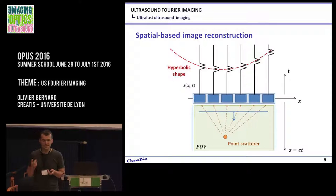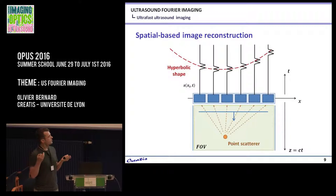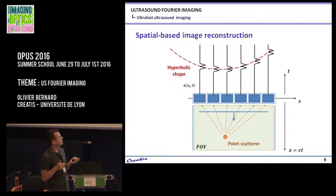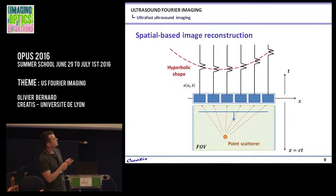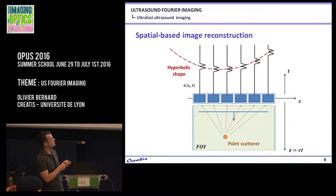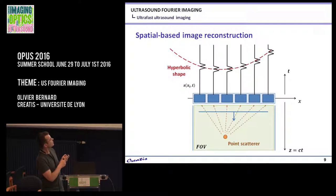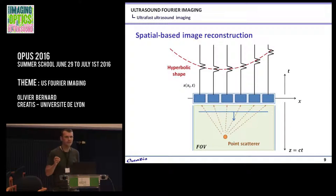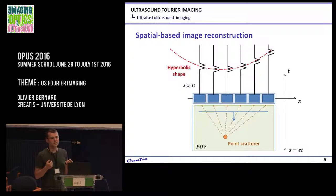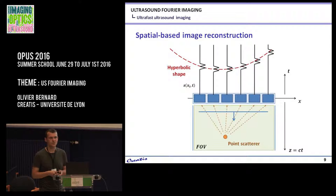Going back to the spatial-based approach: imagine you have only one point target and you emit a plane wave. By the time this target is insonified by the wave, it provides an answer back to the different elements. This information will not arrive at the same time, depending on the relative position of the point scatterer with respect to the different elements. Thanks to basic mathematical law, there is a parabolic shape corresponding to the same information from the same point scatterer. So for each point in the medium you want to reconstruct, you do the parabolic integration of the information and iterate for each point. This is the spatial-based approach.